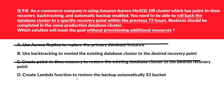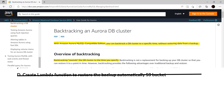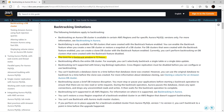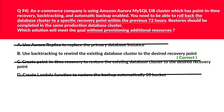Let's look at option D — create a Lambda function to restore the backup automatically to an S3 bucket. There's no mention in the question of what duration the Lambda function will create the backup; it could be once a week or once a year. As per the question, the duration given is 72 hours, so Lambda is not the best option keeping time constraints in mind. As confirmed in the official documentation: with Amazon Aurora MySQL-compatible edition, you can backtrack a database cluster to a specific time without restoring data from a backup, and the limit for the backup window is 72 hours. Therefore, we'll lock B as the correct answer.